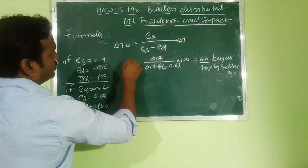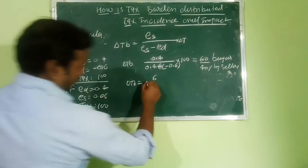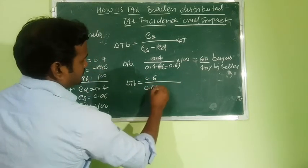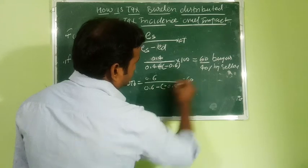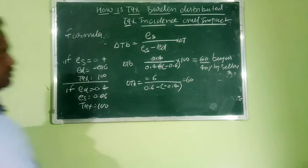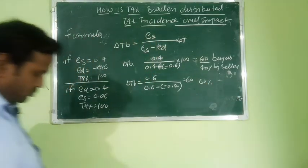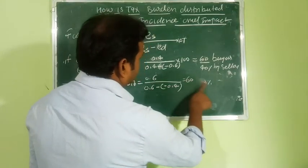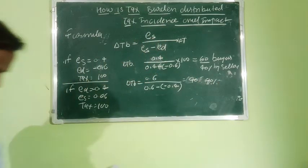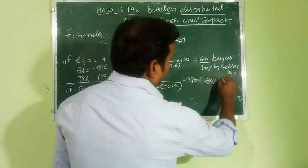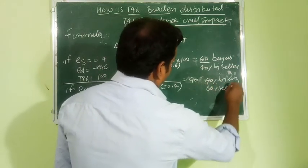The buyer's tax share delta T bar equals 0.6 divided by (0.6 minus 0.4). This gives 60%, meaning 60% is paid by the seller and 40% is paid by the buyer. So please remember this formula: if you are given elasticity of supply, elasticity of demand, and the tax size, put in the values and find the buyer's tax share, with the rest paid by the seller.